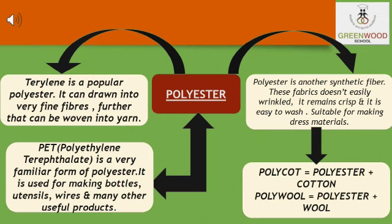Terrylene is another popular polyester which can be drawn into very fine fibers and woven into yarn, from which fabrics can be made. PET — polyethylene terephthalate — is a very familiar form of polyester. You may have seen the label PET on bottles your mother buys. PET is used for making bottles, utensils, wires, and many other useful products.